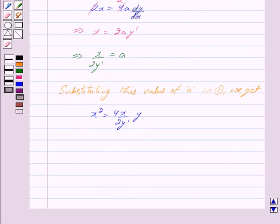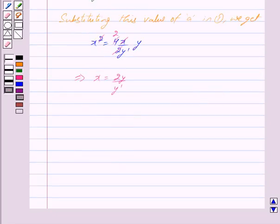Cancelling out x from both sides and cancelling out 2 in denominator and numerator, we get x = 2y/y'. This implies xy' = 2y.